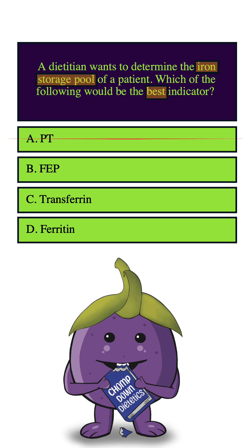How about B, free erythrocyte protoporphyrin (FEP)? It measures the degree of lead poisoning, not iron storage. So we can eliminate this answer as well.